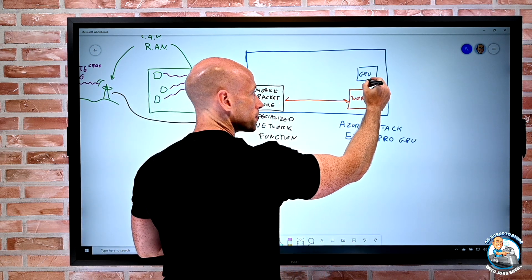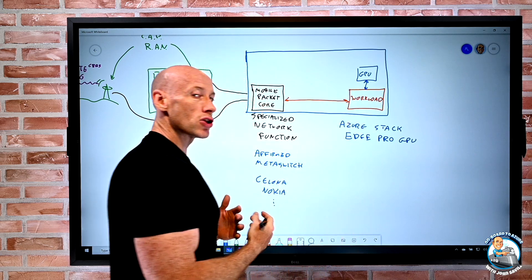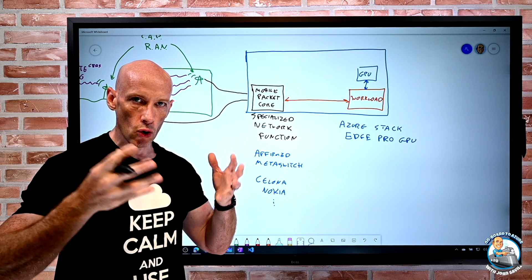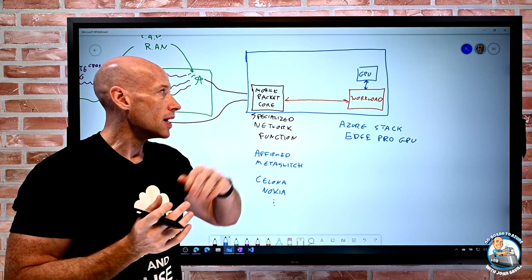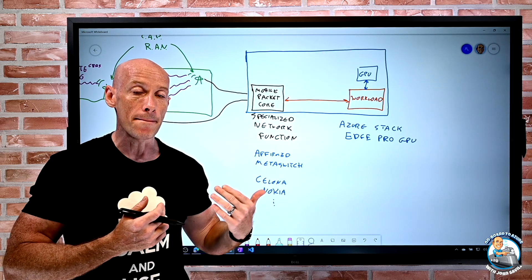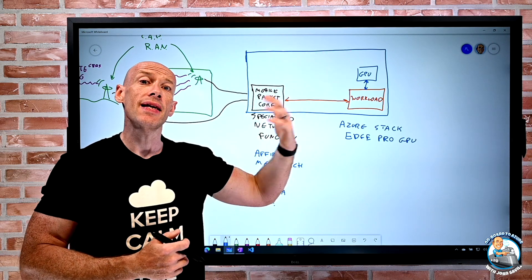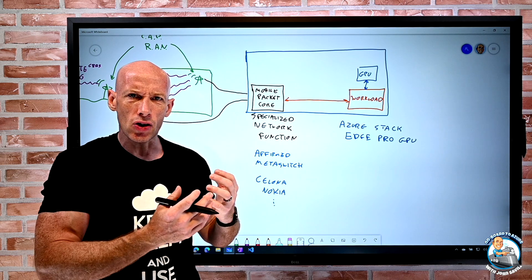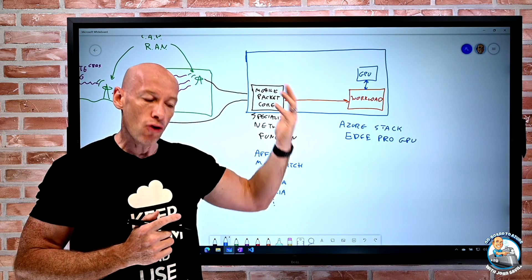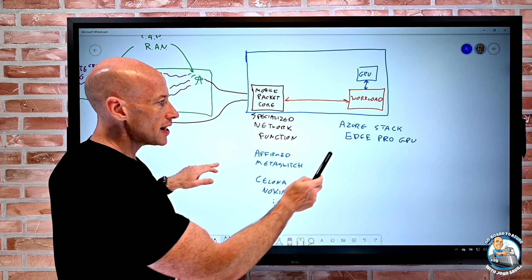When I think about the workload perspective, now we can leverage those GPUs maybe for video inferencing. I can actually make decisions. I can do local processing on that box. Again, from a speed perspective, I don't have to go out to the cloud to get the result to come back to me. Maybe before I send it to the cloud, I have to do some operations on it, maybe sanitize it, remove PII, whatever it might be, before I send it to the cloud.